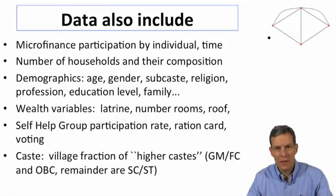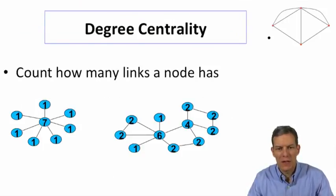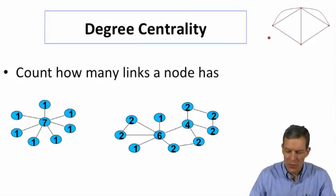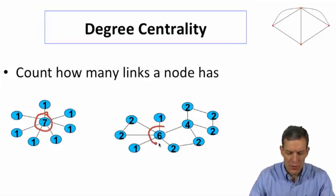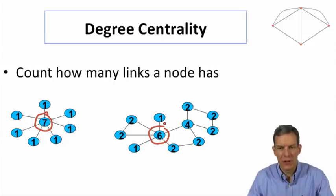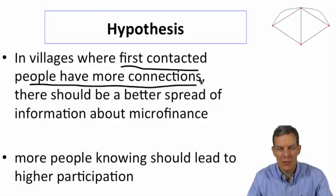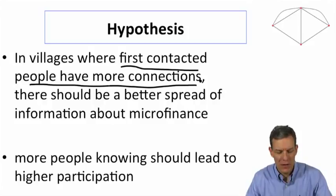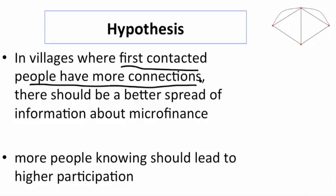Now we want to see whether centrality makes a difference in the diffusion of this loan program. Starting with degree centrality — if we pick the most connected individuals in a village, you would expect to reach more people just because they have higher degree. So one hypothesis is that villages where the first contacted individuals have higher degree centrality should have a better spread of information about microfinance, and more people knowing should lead to higher participation.